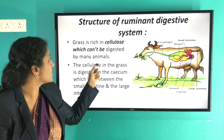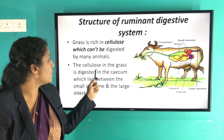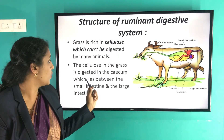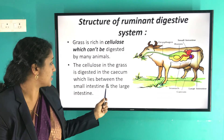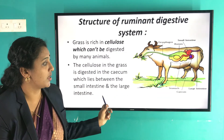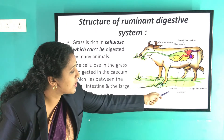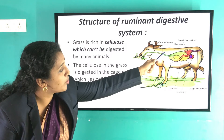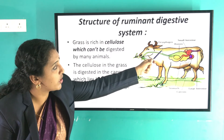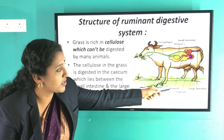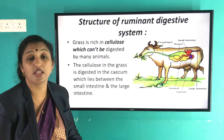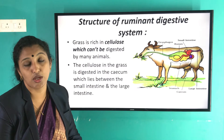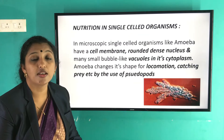The cellulose in grass is digested in the cecum, which lies between the small intestine and the large intestine. The cecum contains special types of bacteria that break down cellulose into simpler forms.